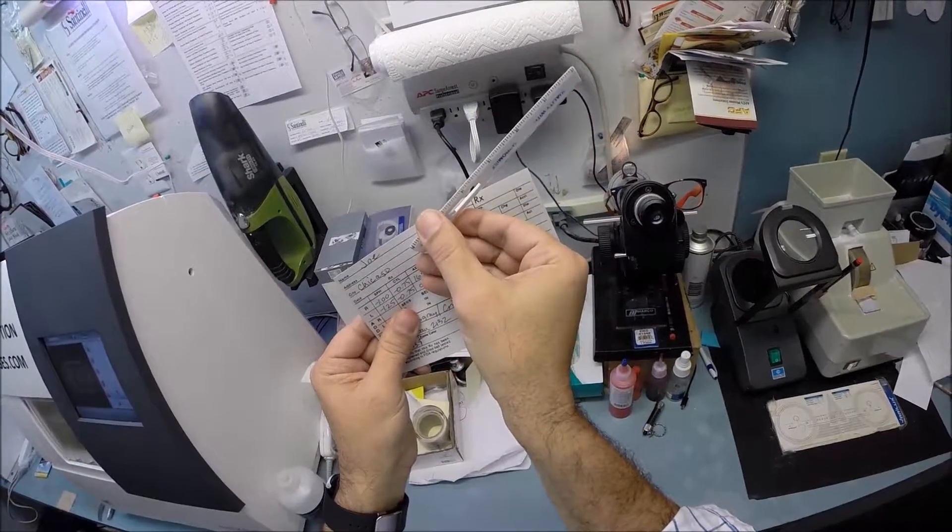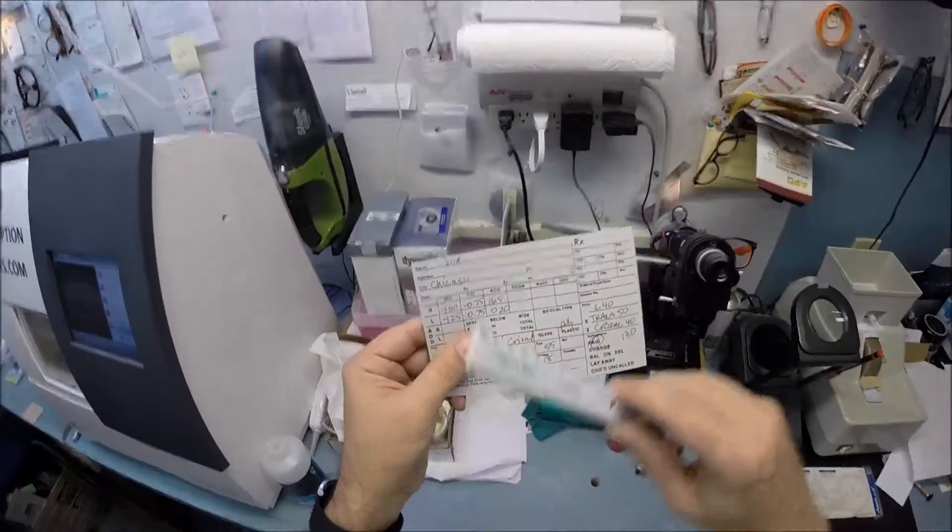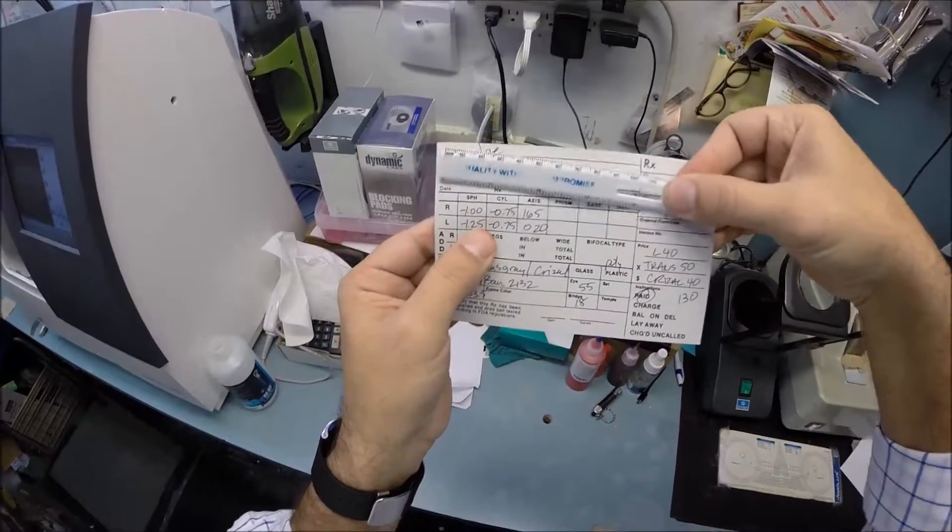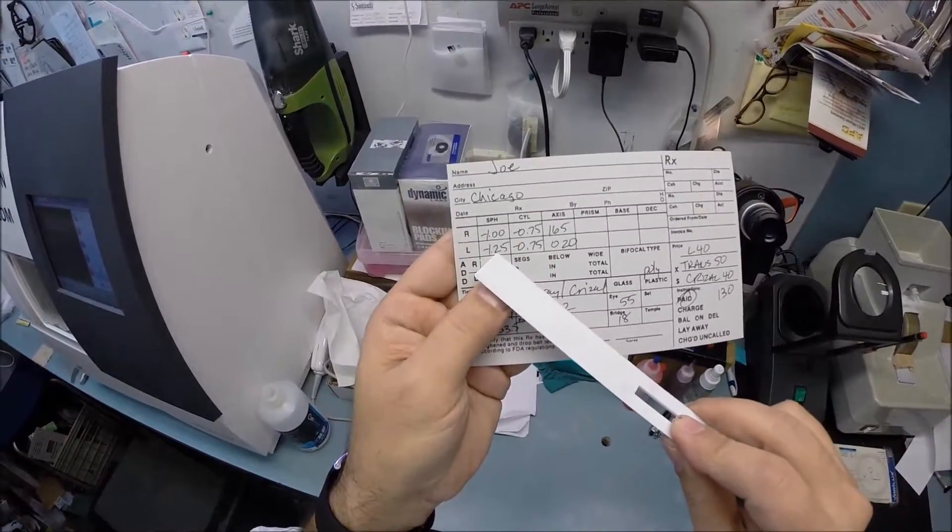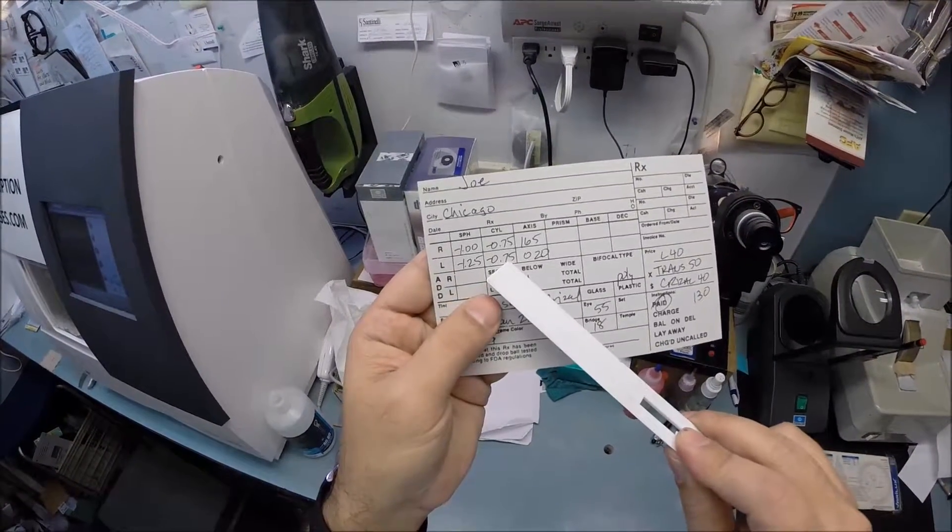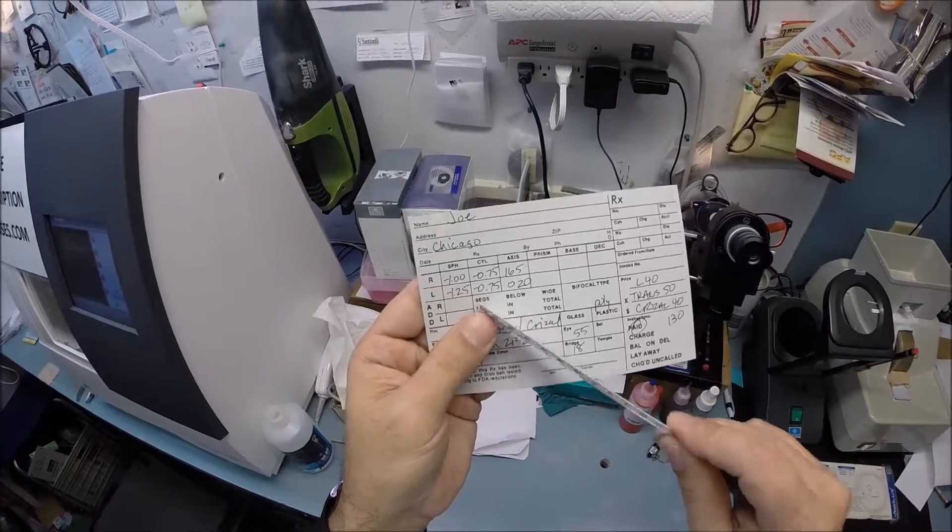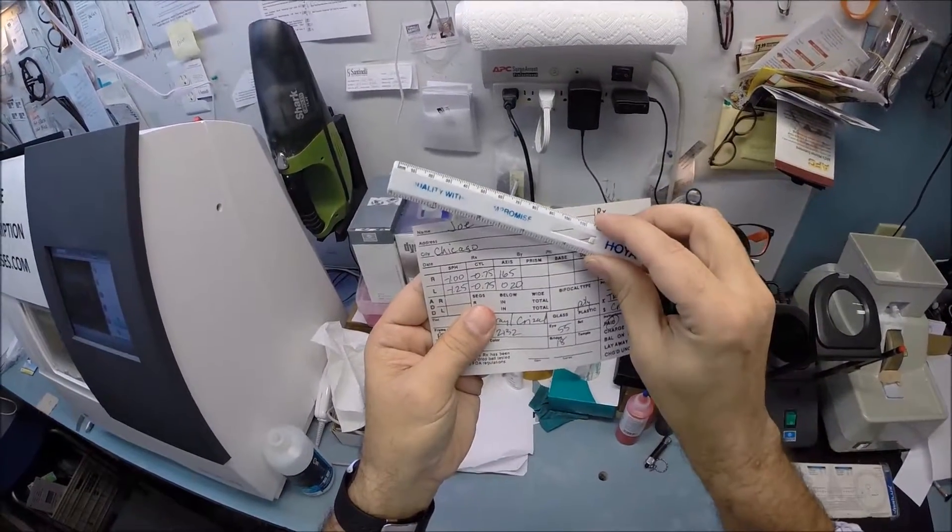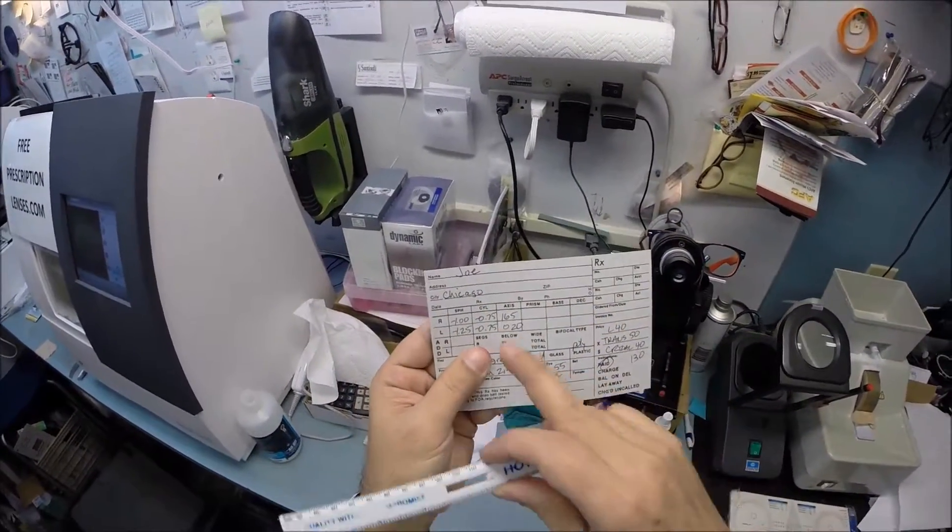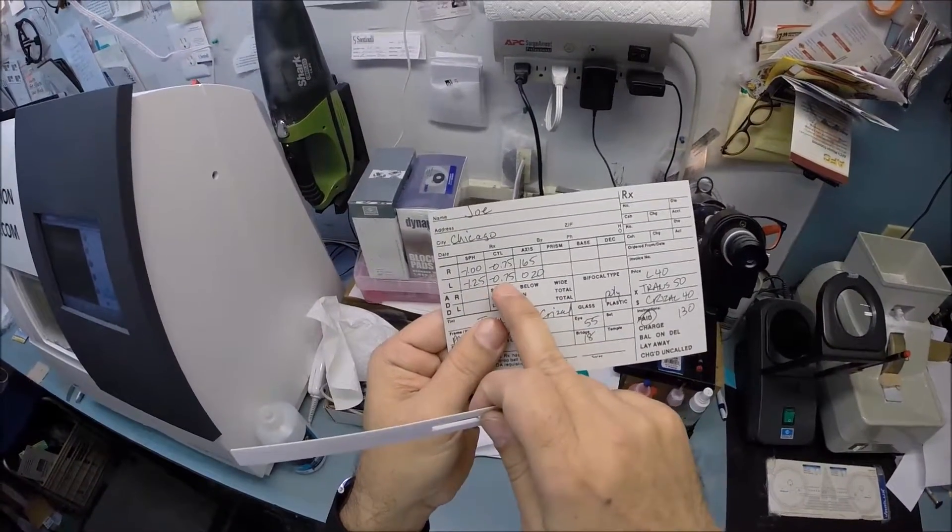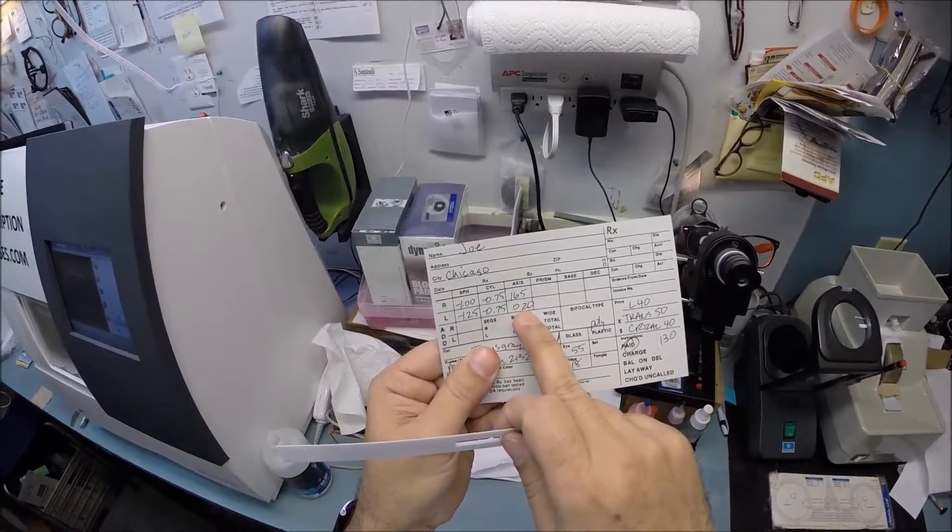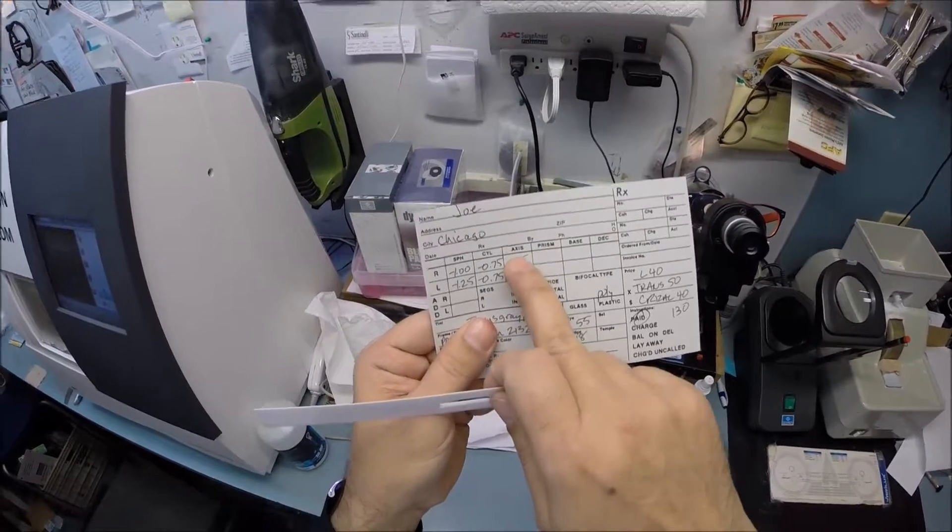Your left eye reads minus 1.25 minus 75 at 20. You need five steps of correction for your left eye, still three steps of astigmatism correction, but we're only going to turn that knob to 20. Now 165 and 20 seem far apart. These first two numbers are real values. This last number could be anywhere from zero to 180 - that is your axis.